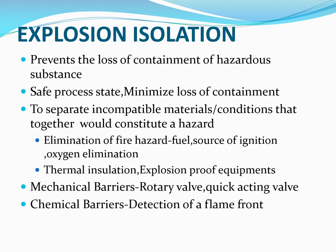A process without interconnections is rare, and any process with interconnections is subject to flame propagation through ducts. Measures are needed to prevent an explosion initiated in one plant from propagating through pipes, ducts, chutes, and conveyors to other parts. Barriers should be created to avoid explosion propagation. There are two basic types of isolation barriers: mechanical barriers, such as rotary valves and quick-acting valves, and chemical barriers, which use detection of the flame front to trigger suppression.